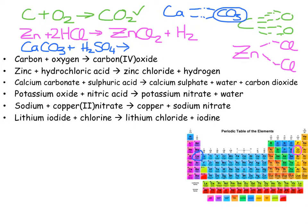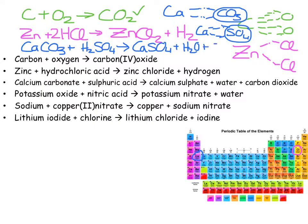The products are calcium sulfate — calcium has valency 2, sulfate from the sheet has valency 2, so CaSO₄ — plus water H₂O, plus carbon dioxide CO₂. Checking the balance: 1 calcium, 1 carbon, 7 oxygens on each side, 2 hydrogens each side, 1 sulfur each side. It balances as it stands.